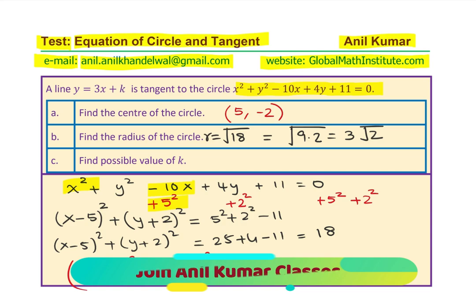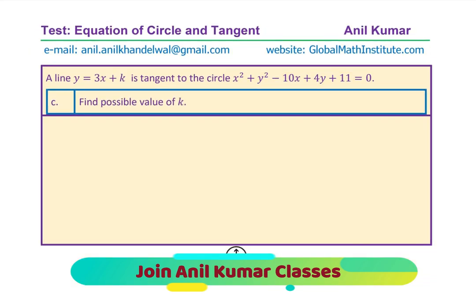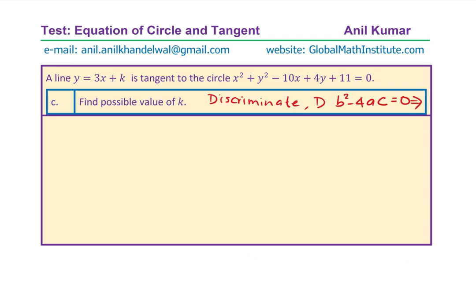Now let us look into part c, which is: the line y = 3x + k is tangent to this circle — find the possible values of k. We have done parts a and b. Finding k involves the condition for tangency, which reminds you of solving quadratic equations with b² − 4ac. The discriminant D = b² − 4ac = 0 will imply that there is a tangent — one common point, one real solution.